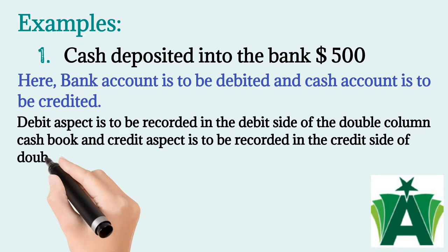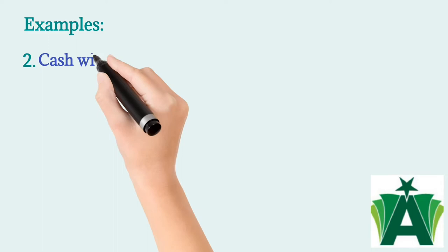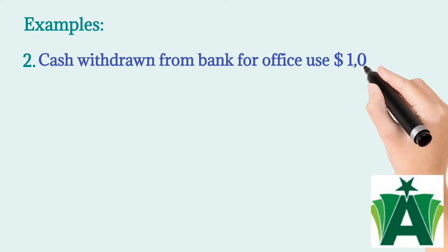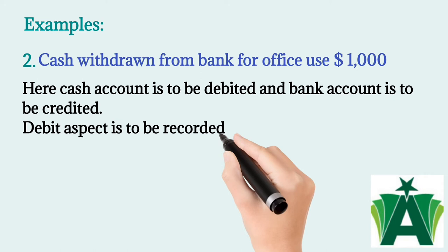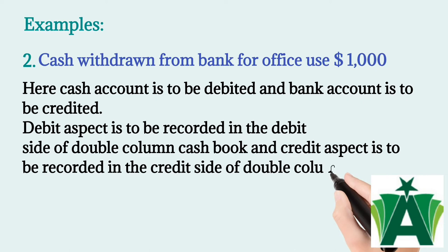Example 2: Cash withdrawn from bank for office use $1,000. Here, cash account is to be debited and bank account is to be credited. The debit aspect is to be recorded in the debit side of the double column cash book, and the credit aspect is to be recorded in the credit side of the double column cash book.